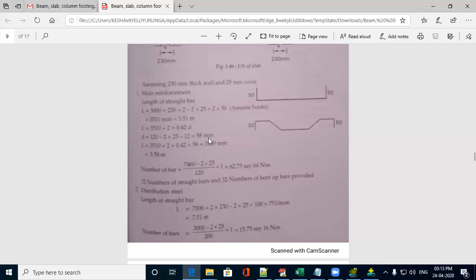Substitute this D value here, you will get the length of total length of bent up bar. That is cranked bar. So, the main reinforcement we got, we need to know how many number of bars are there.